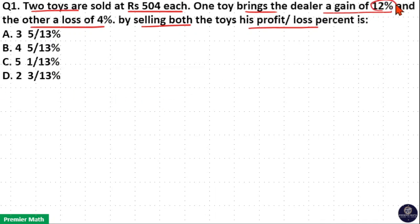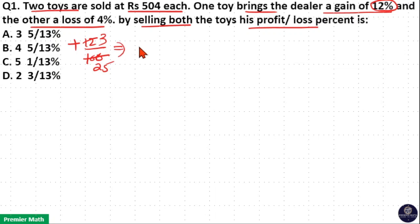One toy brings 12% profit. Profit means plus 12%, which is 12/100. Simplifying: 4 goes 3 times in 12, and 4 goes 25 times in 100, giving plus 3/25. So 25 parts is the cost price, and 25 plus 3 = 28 parts is the selling price. The selling price is rupees 504.